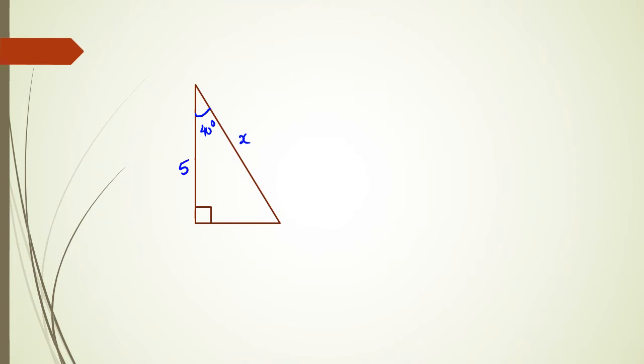Normally with Pythagoras you would have had two sides and you're trying to find the missing side. But with trigonometry, what happens is that you're given some sort of angle and then you are given a side. Say for example they give you this side and then they ask you to find what X is — what the hypotenuse is. The problem is you can't use Pythagoras because you don't have two sides, so this is where the angle comes into play and you've got to use SOHCAHTOA.